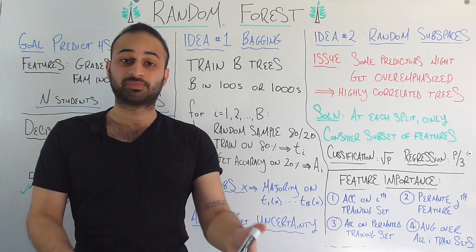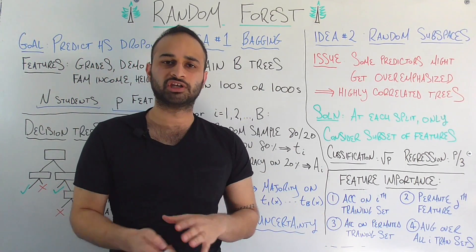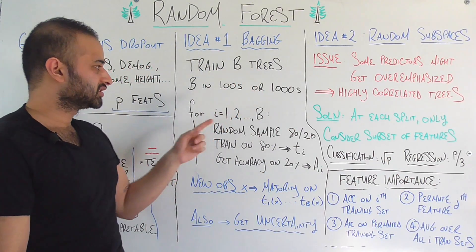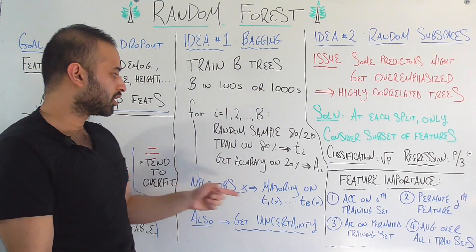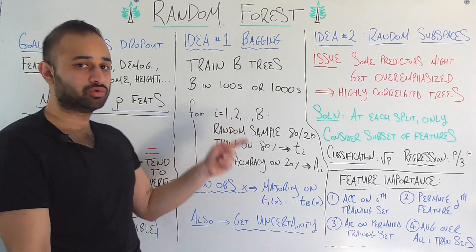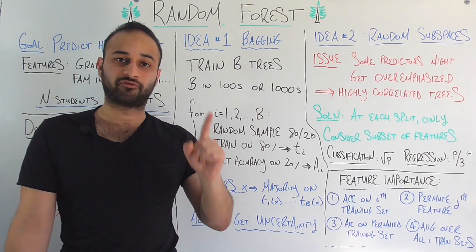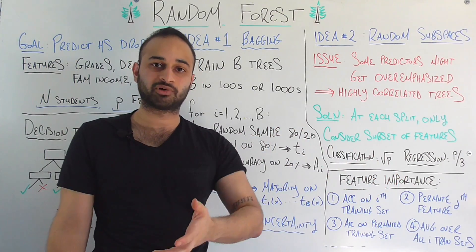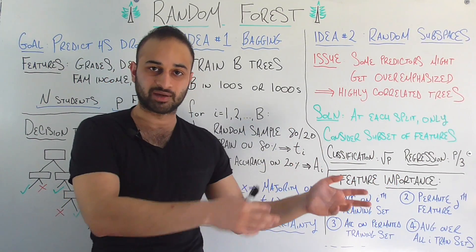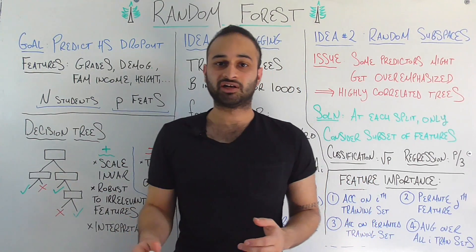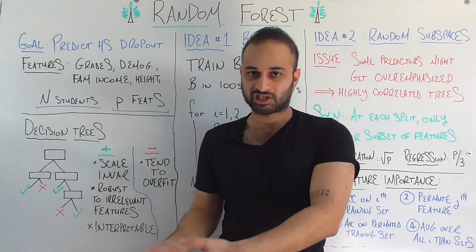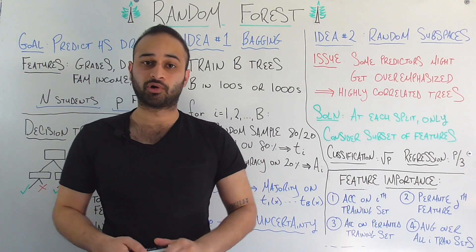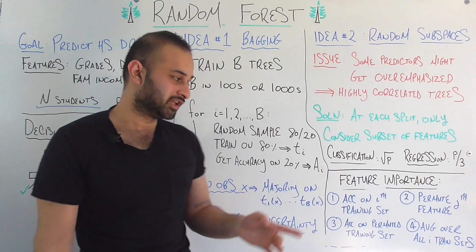The idea of bagging is not specific to decision trees or random forests — it's really something used in general in machine learning. We're going to train B trees, something in the hundreds or thousands. Here's the pseudocode: for i equals 1, 2, all the way to B, we do three steps. First, we randomly split our data into an 80-20 split — 80% training, 20% testing. Then we build a single decision tree on the 80% training data, and we call that tree T sub i. Then we measure the accuracy on the other 20% testing data, calling that A sub i.